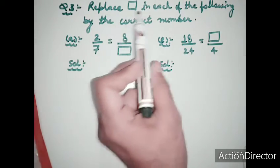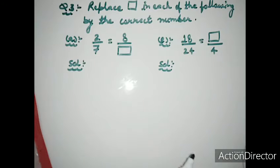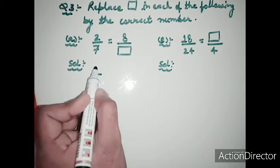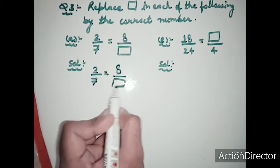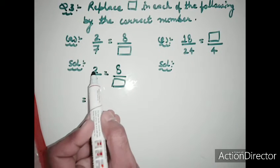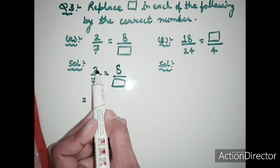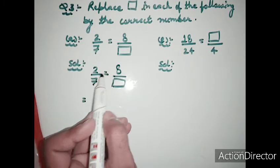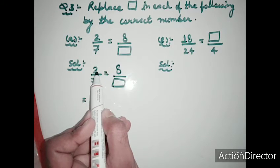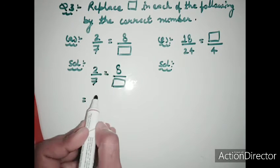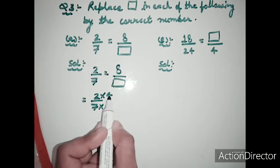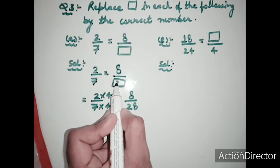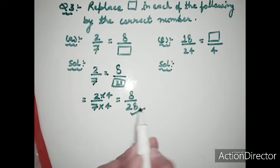Exercise 7.3 Question 3: replace the blank box with the correct number. For 2 upon 7 equals 8 upon blank: we observe that 2 multiplied by 4 gives 8, so we also multiply the denominator 7 by 4. Seven times 4 is 28. So we write 28 in the blank box, giving the fraction 8 upon 28.